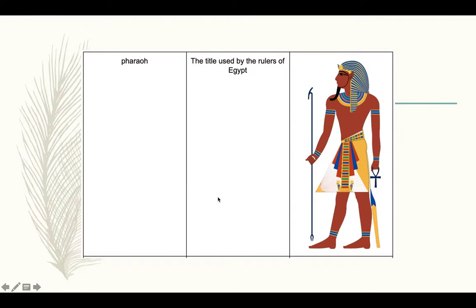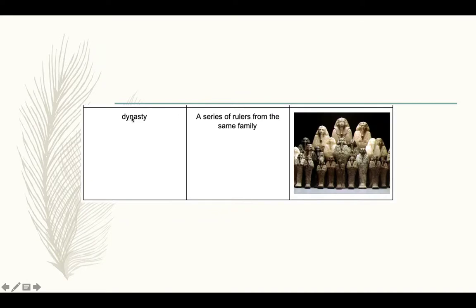There are three terms you need to know for this last section on kings unifying Egypt. The first is pharaoh, which is the title used by the rulers of Egypt — they were like the kings of Egypt. The word dynasty means a series of rulers from the same family.